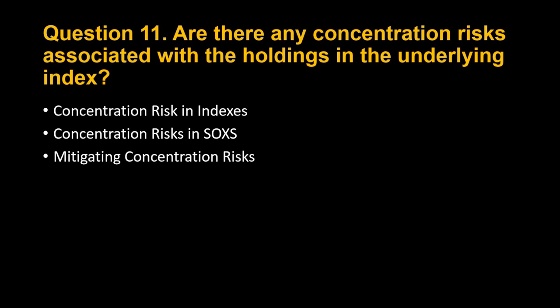For example, imagine the top three holdings of the index represent 50% of its total weight. If these three companies experience a sudden decline, the index value and, inversely, the value of SOXS would likely experience a larger decline than if the same percentage decline was spread more evenly across all the index constituents.